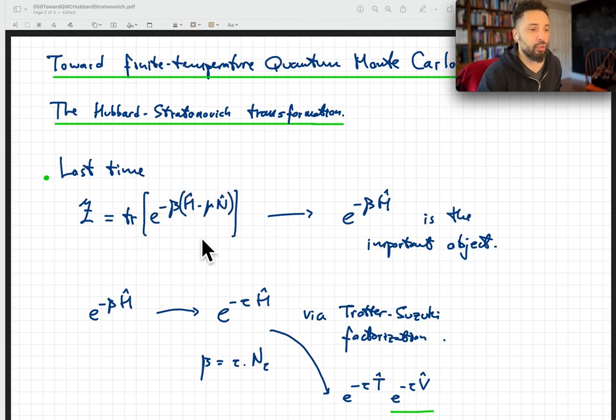This is called the grand canonical partition function. It forms the cornerstone of finite temperature equilibrium thermodynamics. Within this object, usually you will find the particle number operator, the Hamiltonian operator, and these two usually will commute. The main complication is in this object, this e to the minus beta Hamiltonian.